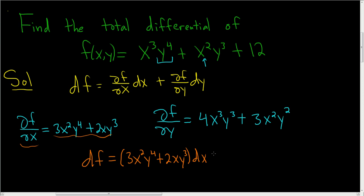and then plus ∂f/∂y, that's this piece here. So this will be 4x³y³ + 3x²y² and then dy.